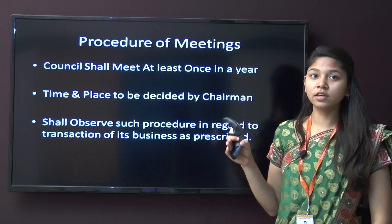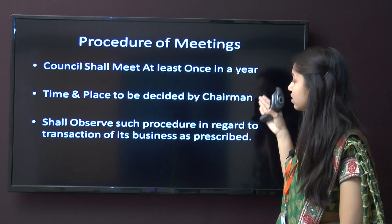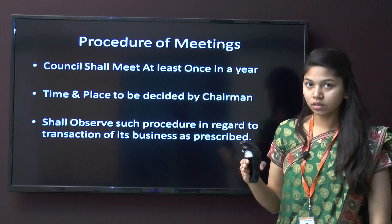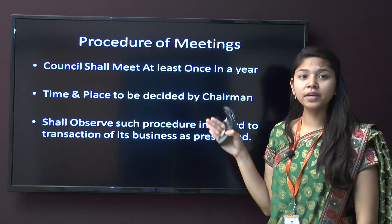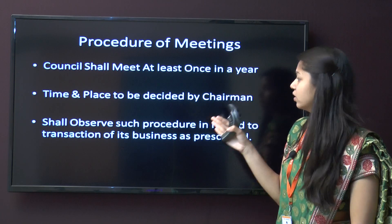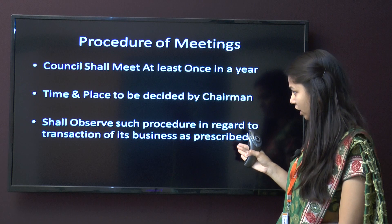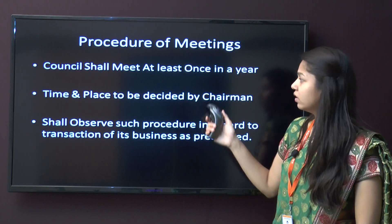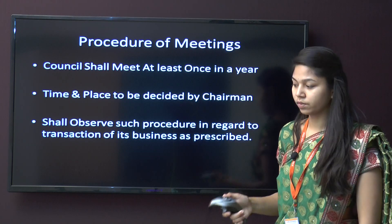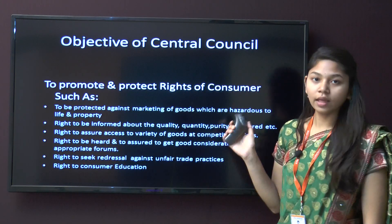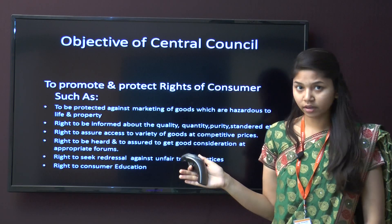Regarding the meeting procedure of the Central Consumer Protection Council: the council shall meet at least once in a year. The time and place is to be decided by the chairman, who shall observe such procedure in regard to the transaction of its business as prescribed. The council shall have 150 members.